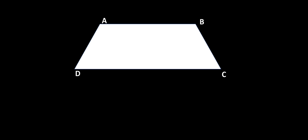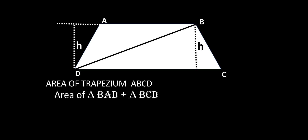In the second method, we have trapezium ABCD. We can split the total trapezium by taking one of the diagonals, BD. The diagonal splits the total trapezium into two triangles. Triangle BCD has area half base into height, and triangle ABD also has area half base into height. The height here is the perpendicular distance between the two parallel sides of this trapezium.